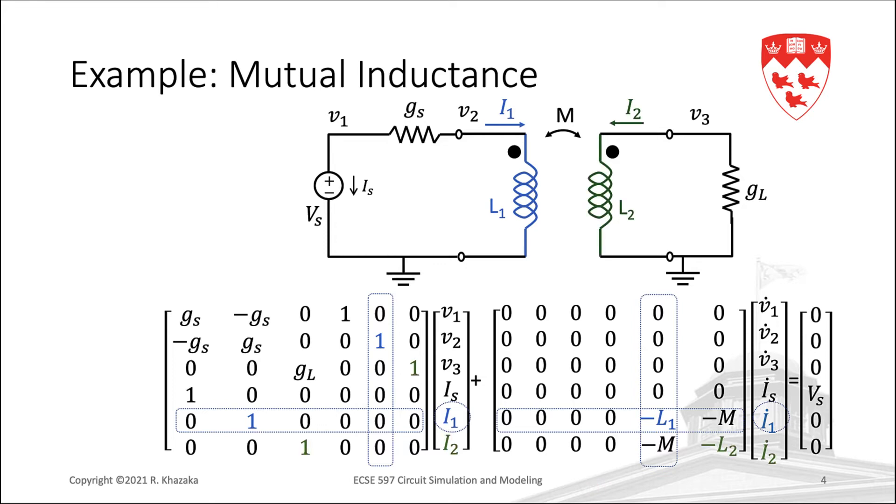Now, if we look at L2 while ignoring the coupling between the inductors, we also need to add a new variable I2, a new corresponding column, and a new row. What we have now in green is the regular inductor stamp for L2, ignoring the mutual inductance.